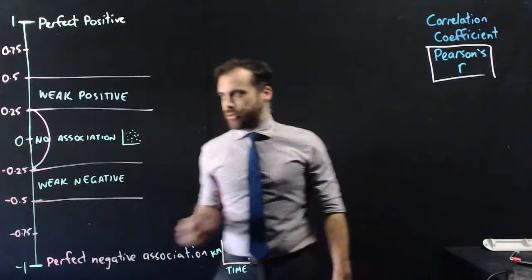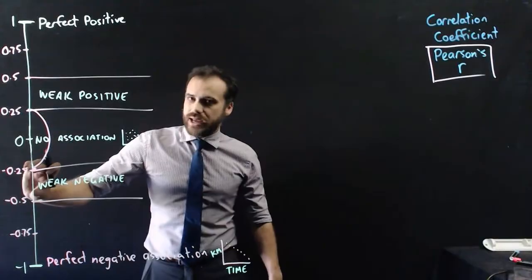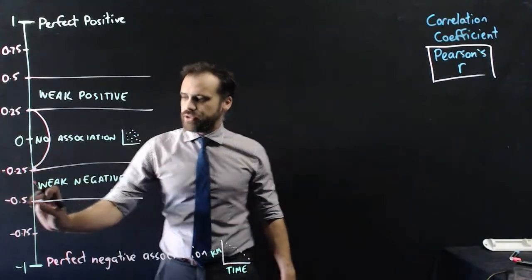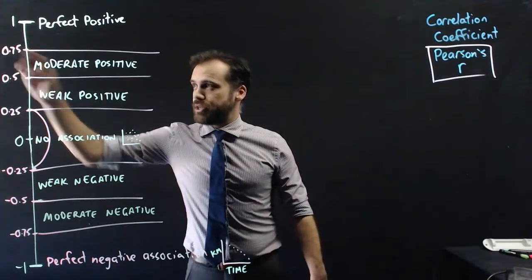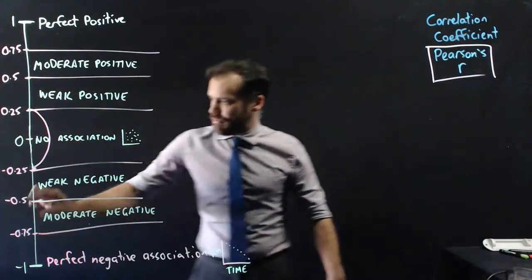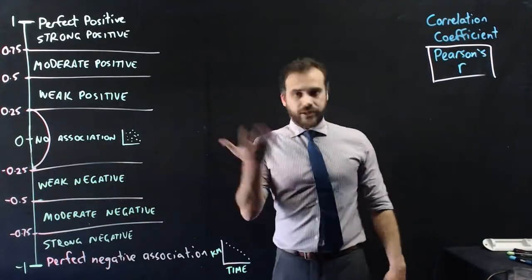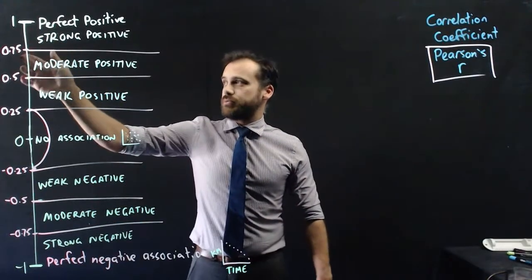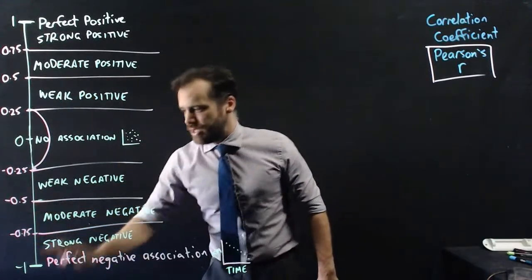I think you can probably see where I'm going with this. Between 0.25 and 0.5 is going to be weak positive. Between negative 0.25 and negative 0.5 is going to be weak negative. Between 0.5 and 0.75, moderate positive. And between negative 0.5 and negative 0.75, moderate negative. Finally, no surprise here, strong positive from 0.75 to 1 and strong negative from negative 0.75 to negative 1.